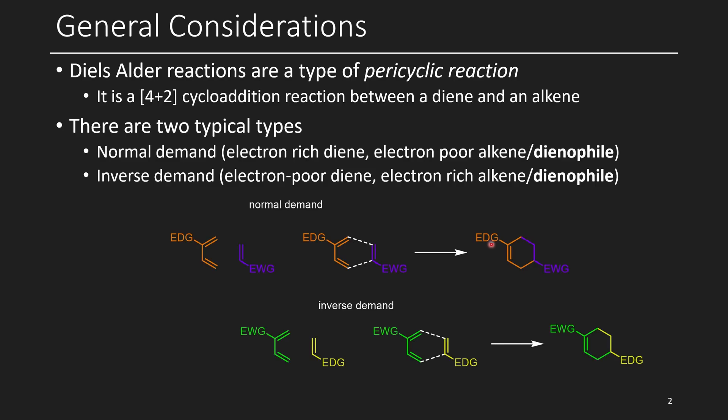If you were to have a donating group on both of them, usually the reaction wouldn't work as well. You can still have Diels-Alder reactions happening without a strong electron-donating or withdrawing group, but having these groups tends to accelerate the rates, which is often desirable in chemistry. Because if the rates are low, chemistry doesn't really happen, at least not at a rate that we care about.